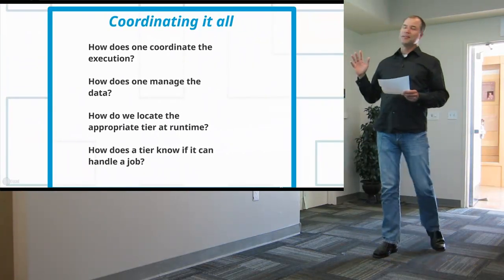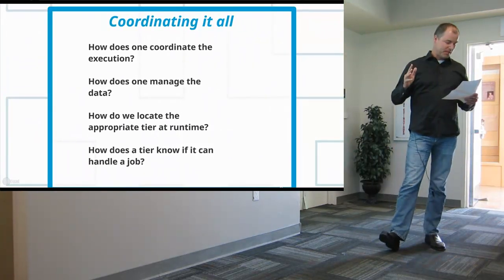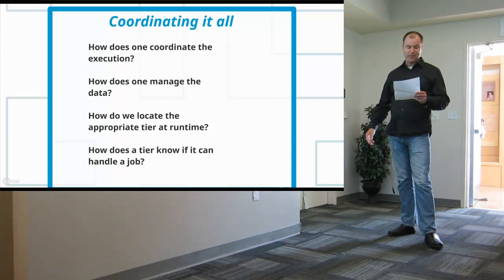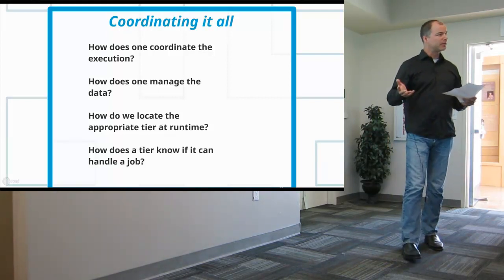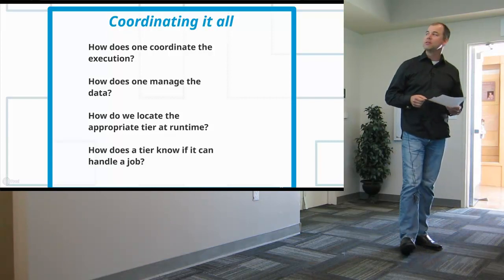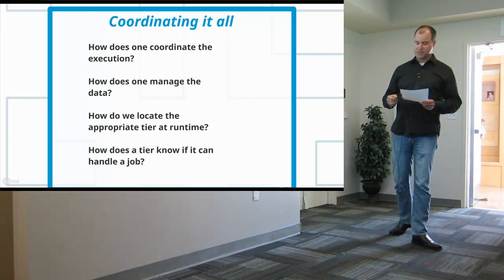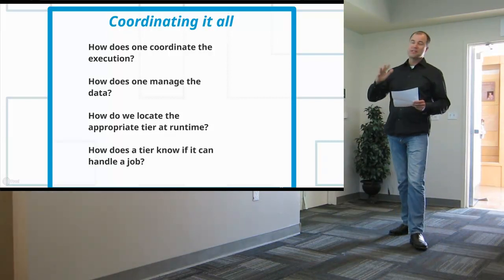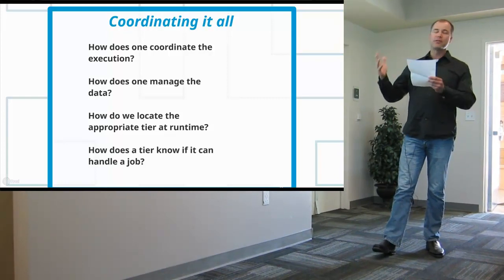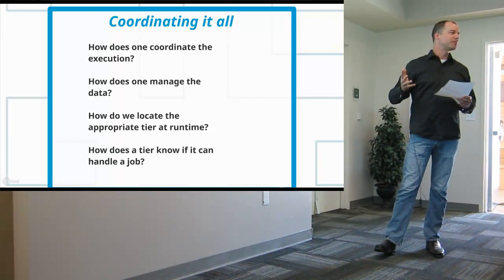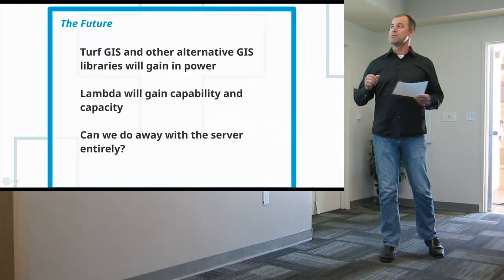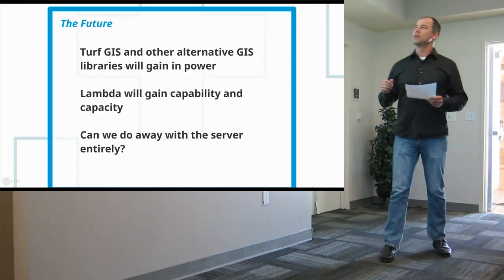There's a problem still, and I think you've probably all seen it: we have to coordinate all these tiers. We have to manage the data, decide where it goes, and determine which tier is going to execute a particular geoprocessing job. This is the piece that needs to be figured out and built — it doesn't exist yet — and it's critical to do it right, because if you don't, you can end up with an even more complex arrangement than the traditional geoprocessing server.